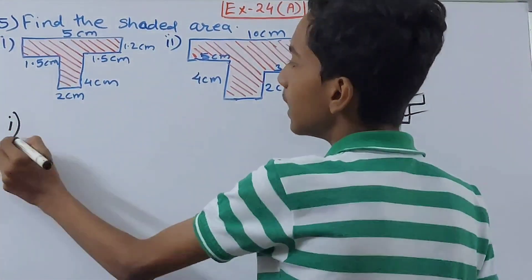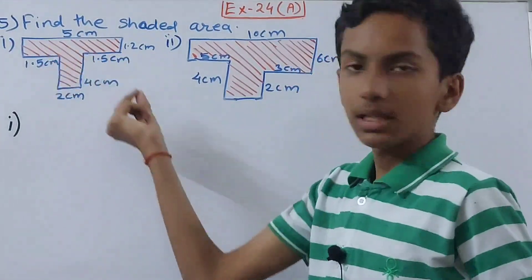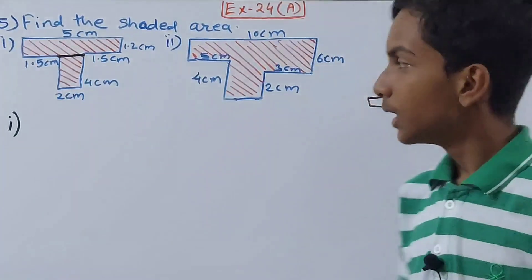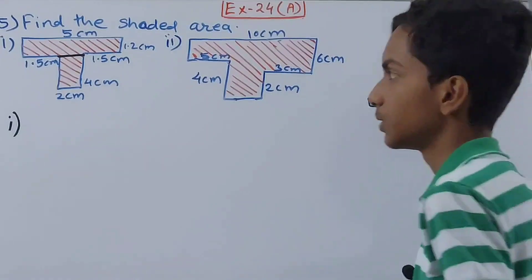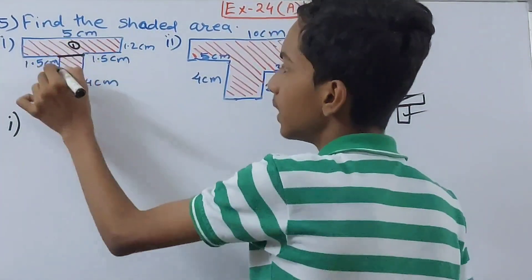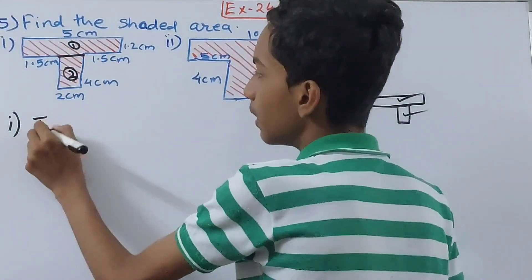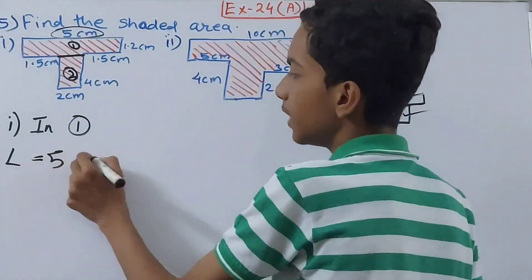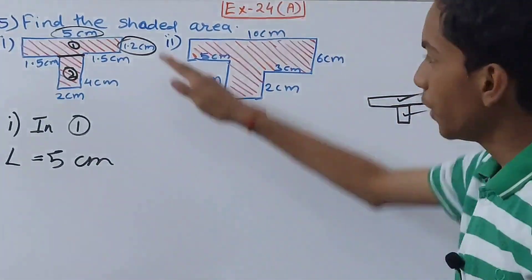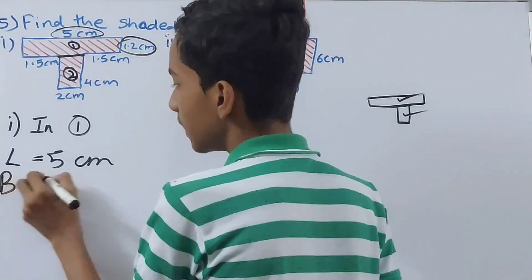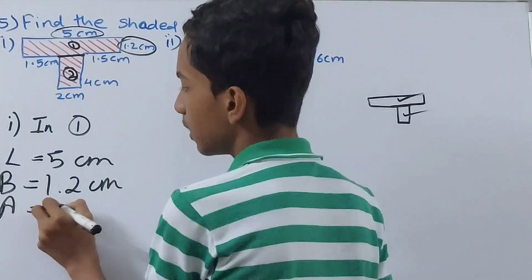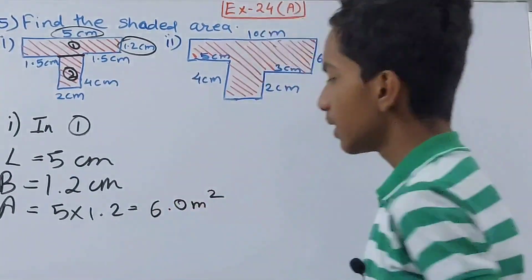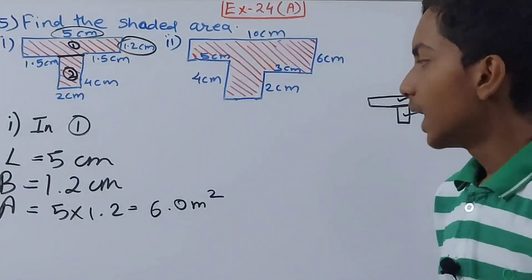We'll do the same thing for the first figure. I'll divide it and name the parts one and two. In the first rectangle, the length is 5 centimeters and the breadth is 1.2 centimeters. So the area becomes 5 × 1.2 = 6 square centimeters.